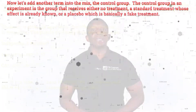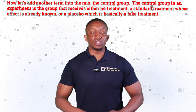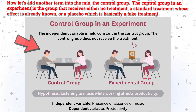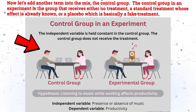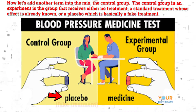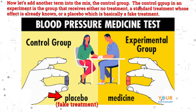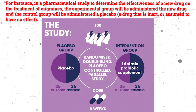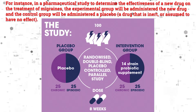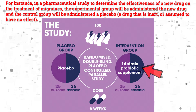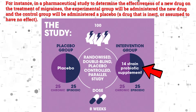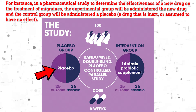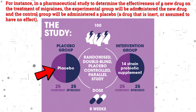Now let's add another term into the mix: the control group. The control group in an experiment is the group that receives either no treatment, a standard treatment whose effect is already known, or a placebo — which is basically a fake treatment. For instance, in a pharmaceutical study to determine the effectiveness of a new drug on the treatment of migraines, the experimental group would be administered the new drug, and the control group would be administered a placebo — a drug that is inert or assumed to have no effect.